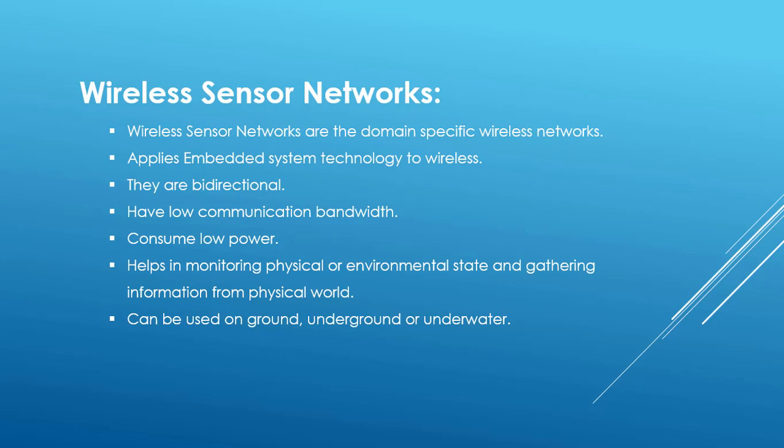Wireless sensor networks are domain-specific wireless networks — networks designed for a special purpose. They apply embedded system technology to wireless communication, and packets transferred over the network are bi-directional, meaning packets can be transferred in both directions. They have low communication bandwidth, meaning a very low amount of data is transferred over the network.